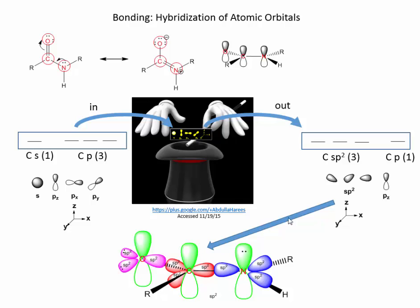Likewise, there's a leftover p orbital sticking up, and that will allow us to have a pi bond between the carbon and the oxygen. If we look at this oxygen, there are three equivalent orbitals coming out of it. So without throwing it into the hat, we can surmise that there are three sp2 orbitals derived from the oxygen as well. Here's one, and here are the other two. These are in a plane and hold the lone pairs. This p orbital therefore allows pi overlap with the carbon to produce the pi bond.